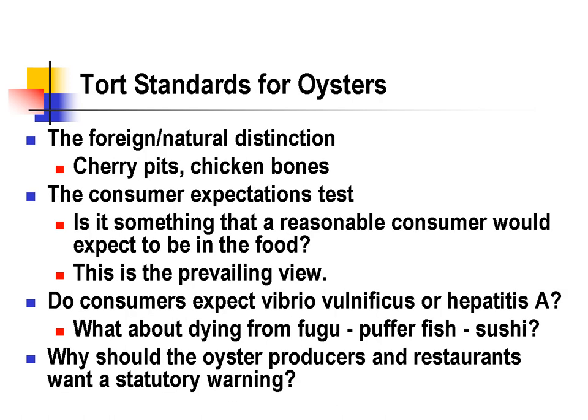Oysters have always been dangerous — the most obvious and frequent danger is breaking a tooth on a piece of shell. In classic tort law, we look at foreign objects in food under the foreign/natural distinction: cherry pits in cherry pie or chicken bones are natural things you should expect, and that includes pieces of oyster shell. If you bite into a screw that's fallen out of the air conditioning duct in the kitchen, that doesn't fall into the natural category and there can be liability for that. More broadly, the courts are looking at the consumer expectations test: is whatever happens because of the food something a reasonable consumer would expect to be in the food?